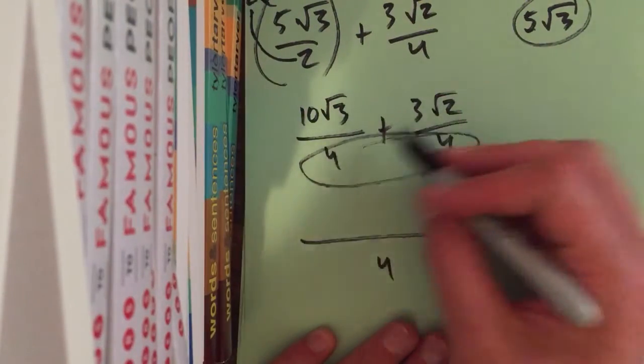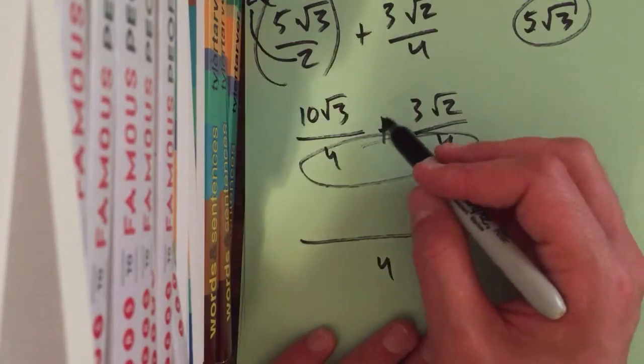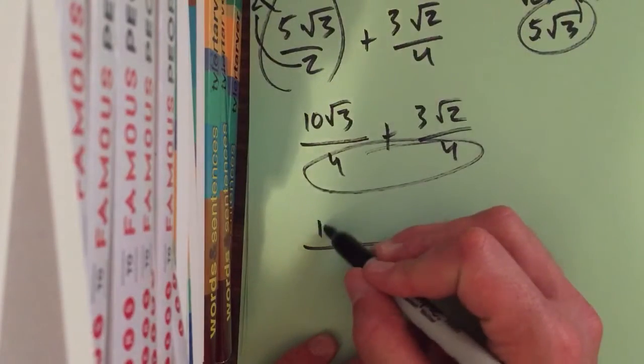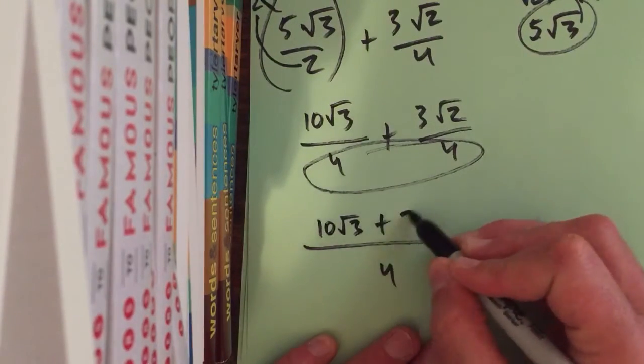If it's multiplying, you multiply across and across, but with adding or subtracting, you really just get a common denominator, and then you add across the top. Now, we got 10 radical 3 plus 3 radical 2.